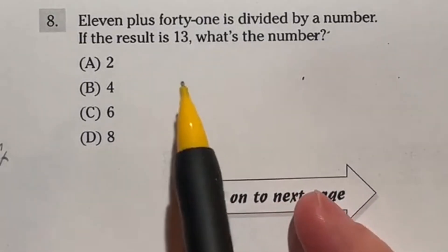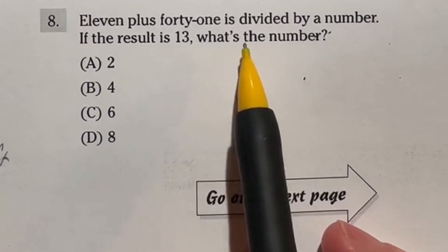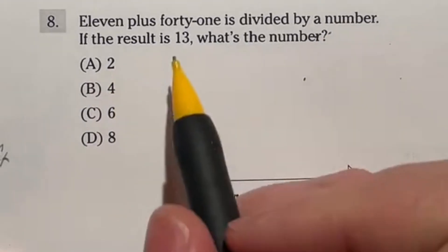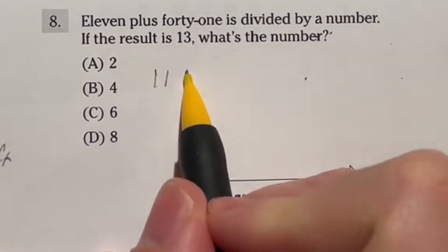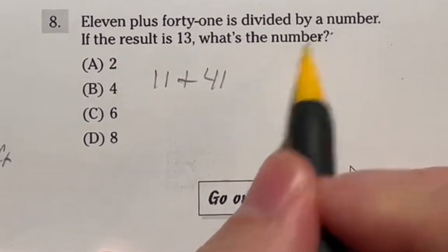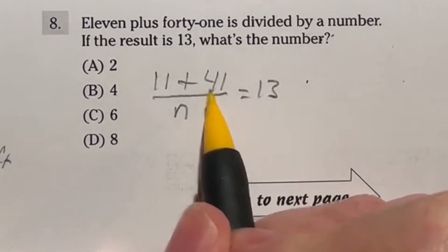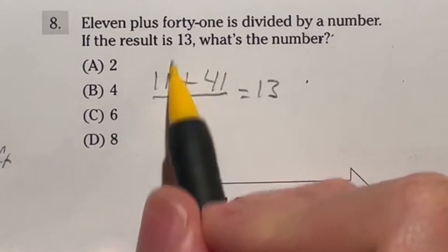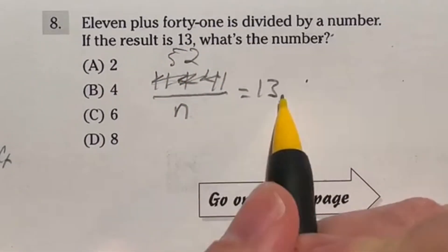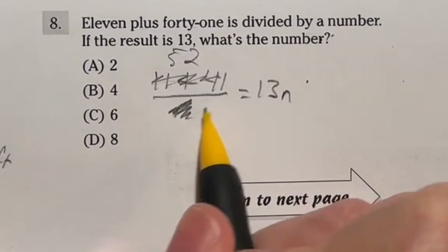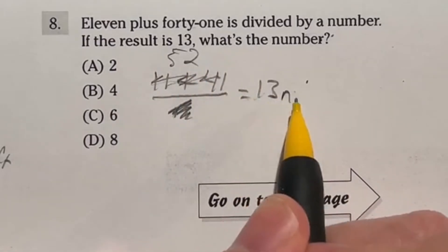Number eight on the ASVAB has a little bit of wordplay here. It says 11 plus 41 is divided by a number. If the result is 13, what's the number? So let's go ahead and best off usually is to actually write this out, put some thought into this. So it says here, 11 plus 41. So 11 plus 41 is divided by a number. And the result is 13. So this is what we're looking at here. Well, right off the bat, 11 plus 41, let's do that one. We are looking here at 52 by adding these two together.